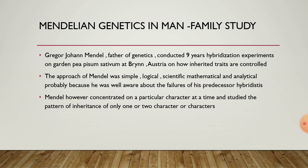To understand genetics, we have to understand certain concepts of inheritance. Mendel, one of the pioneering personalities in this field, gave laws of genetic study. George John Mendel, father of genetics, conducted a nine-year hybridization experiment on garden pea named Pisum sativum at Brno, Austria, on how inherited traits are controlled. The approach of Mendel was simple, logical, scientific, mathematical, and analytical, probably because he was well aware of the failures of his preceding hybridists.